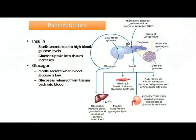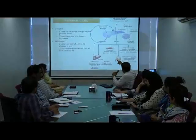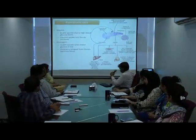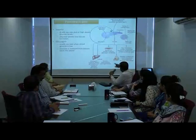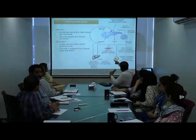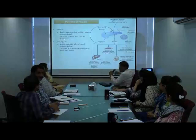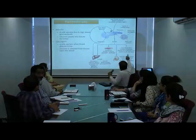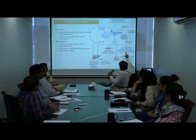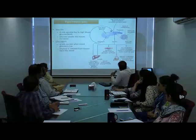Alpha cells secrete glucagon. Here is the pancreas with alpha and beta cells. Glucagon affects the liver, causing glycogenolysis, while insulin suppresses glycogenolysis. Muscle also takes up glucose with the help of insulin, so there is peripheral utilization in both muscle and adipose tissue. The kidney tubule: insulin increases the absorption of glucose from the filtrate.